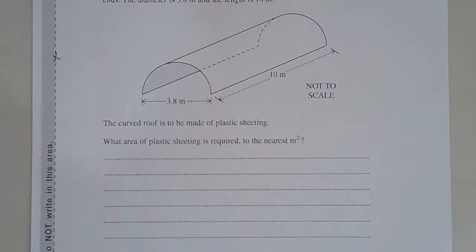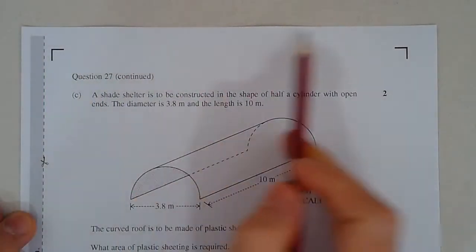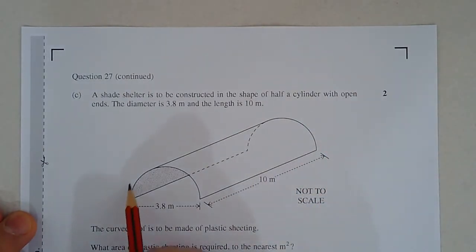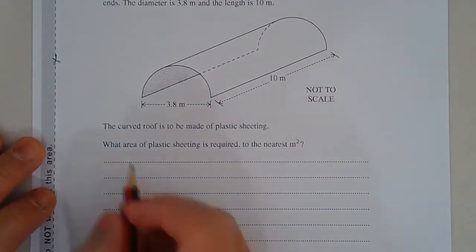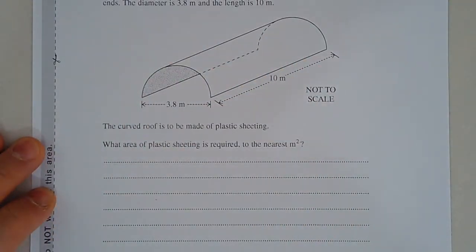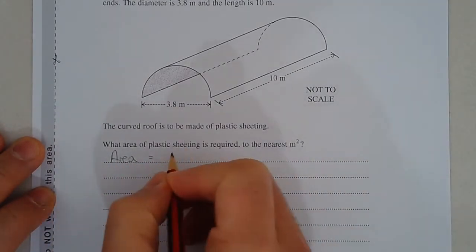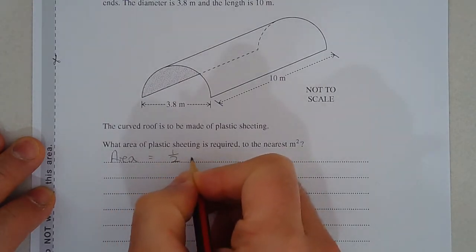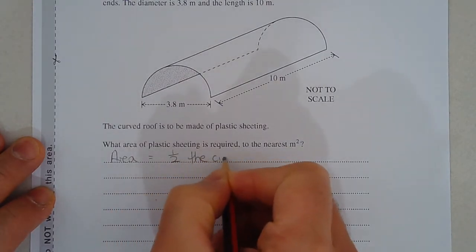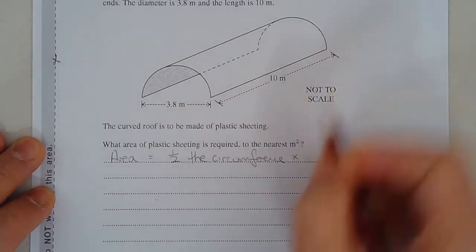Now the width of this rectangle is in fact equal to half the circumference of this circle. So the area of this rectangle is equal to half the circumference of the circle multiplied by the length.